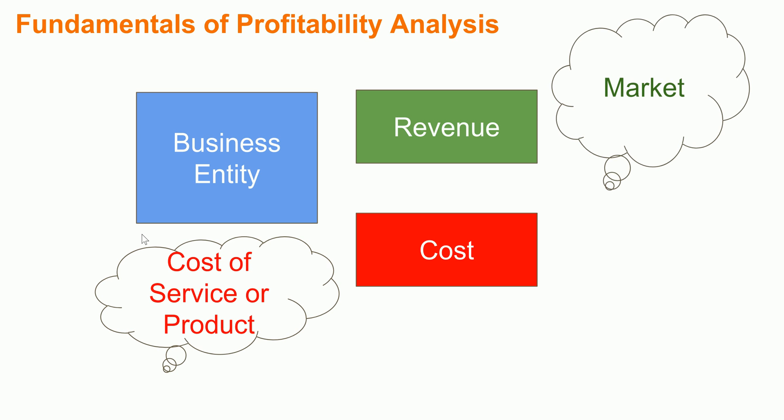On the cost side you have cost of product or cost of service, and there are also direct costs and indirect costs. I will go over every element of cost and every element of revenue later on. But at a very high level you have cost of service or cost of product on one side and the revenue generating elements in the market on the other.